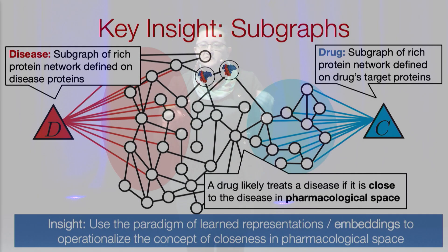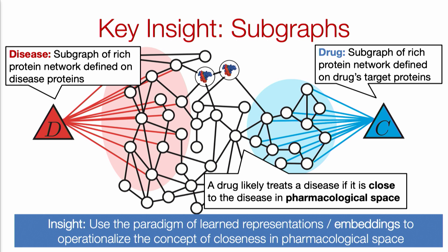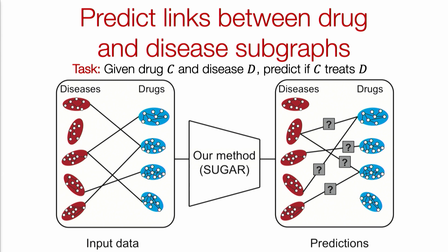In pharmacology, it is known that a drug is likely to treat a disease if it is close to the disease in pharmacological space. This is hard to work with computationally — there is no way to explicitly parameterize that closeness. Our solution is to leverage the power of embeddings or learned representations for drugs and diseases: we embed drugs and diseases in some embedding space and measure closeness there as a proxy for closeness in pharmacological space. The prediction task is predicting links between our drug-disease subgraphs, where inputs are drug-disease pairs each represented by a subgraph.